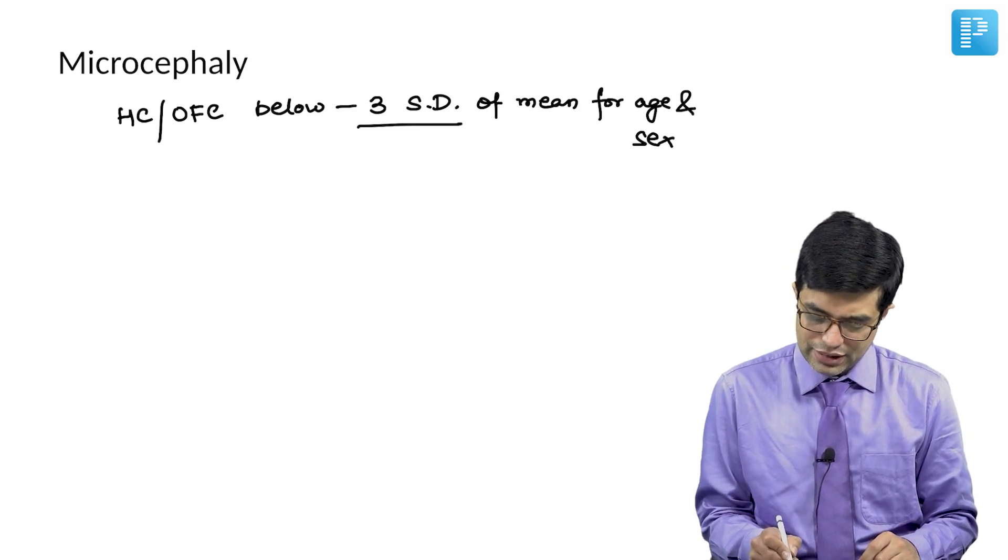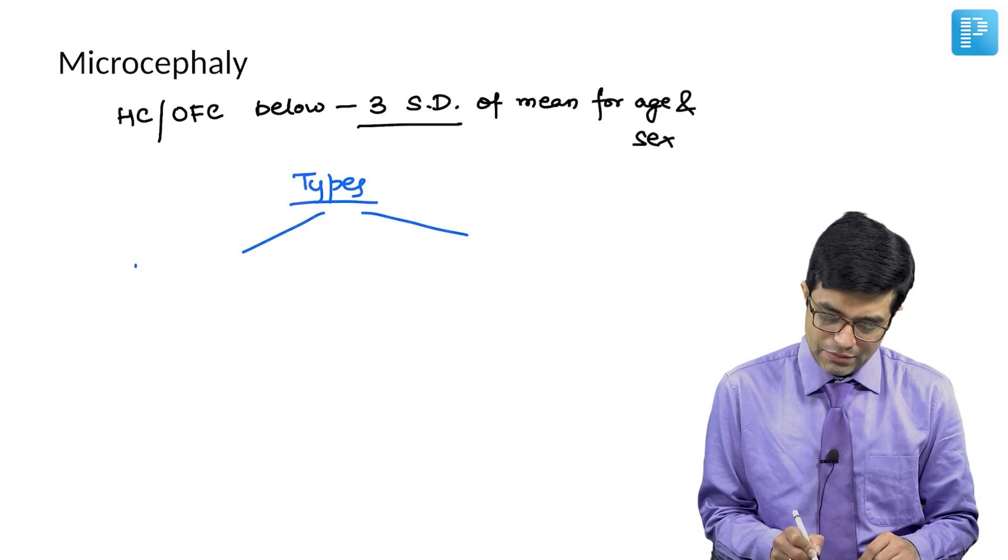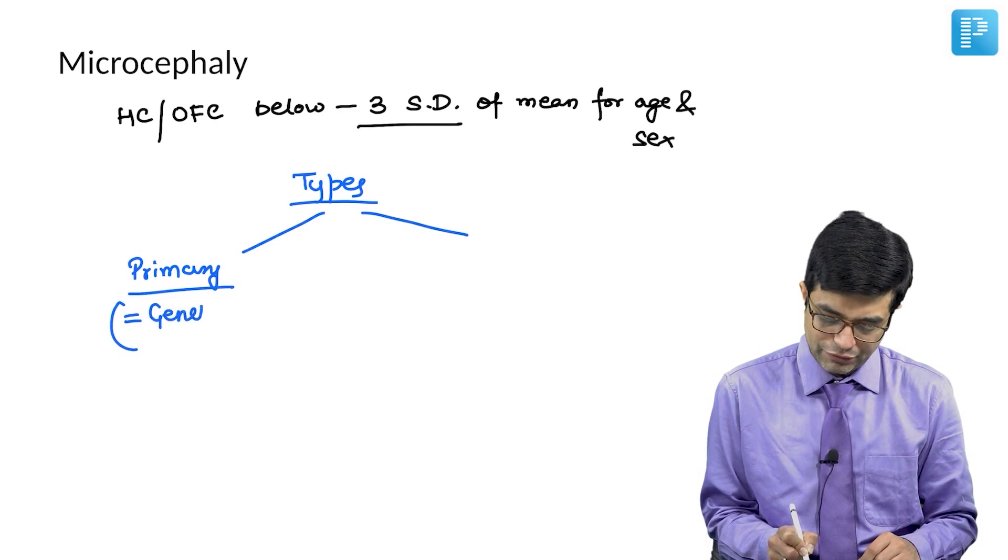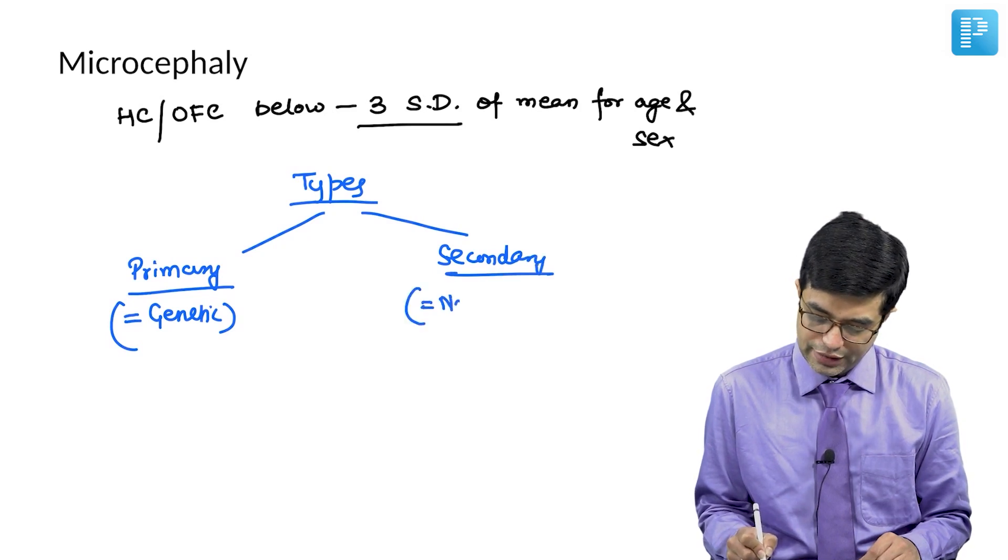Microcephaly, according to Nelson, is divided into two parts. We can have primary microcephaly which occurs due to genetic syndromes. It is also called genetic microcephaly. And second is secondary microcephaly, which is usually due to non-genetic causes.